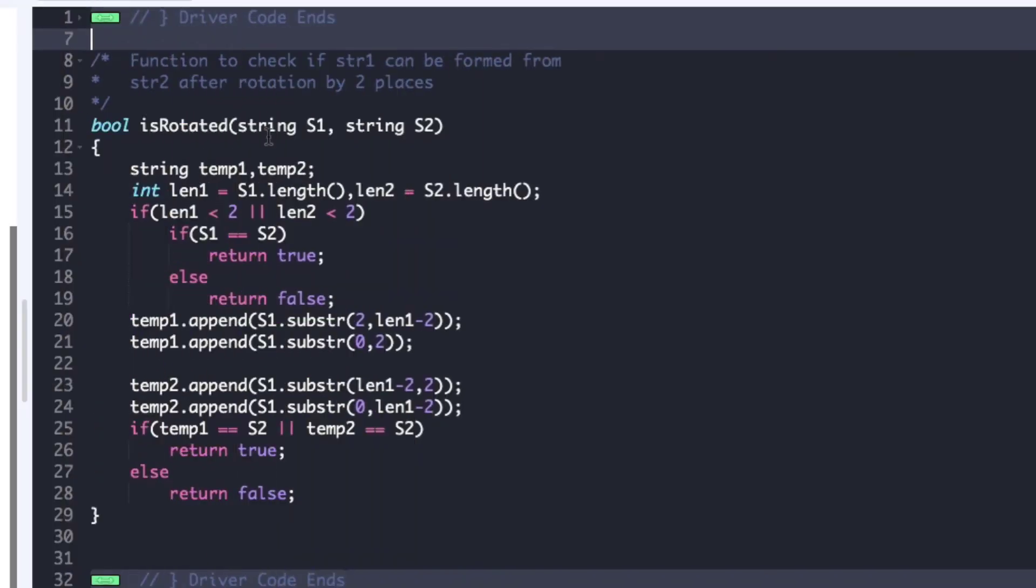So now let's have a look at the actual code. The driver code is already given and we just need to complete the function is rotated whose return type is bool and the arguments are the string s1 and s2.